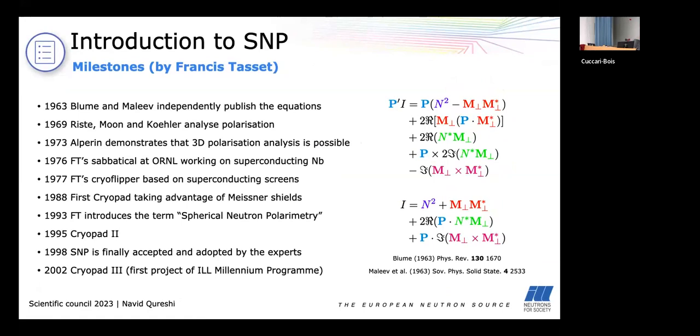So those are the milestones in the history of SNP as defined by Francis himself. It's a slide which he gave to me at the end of last year when I was organizing a series of online seminars and he was supposed to contribute but he couldn't in the end because of technical problems. So I'm happy to show you his slide. Everything begins with the Blum-Maleev equations which show that certain components of the final polarization are related to different cross-sections: nuclear, magnetic, interference, chiral cross-sections.